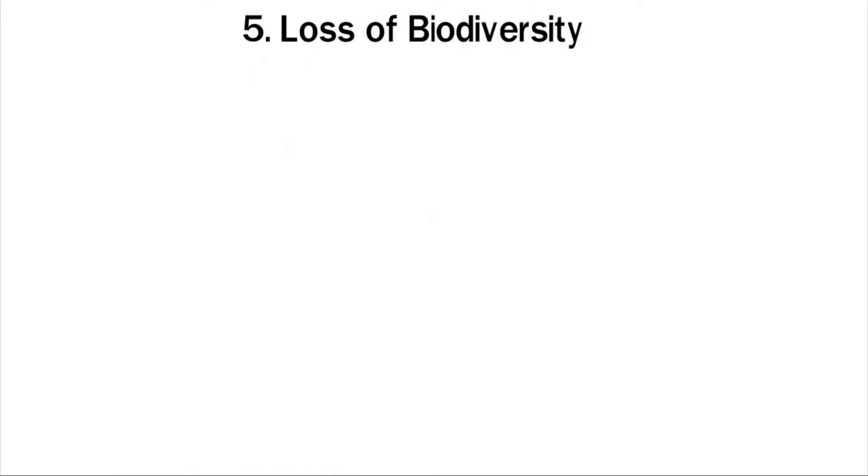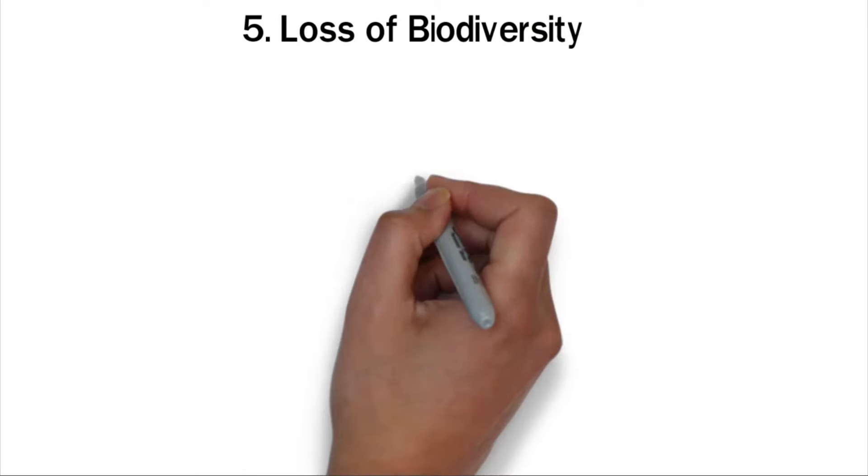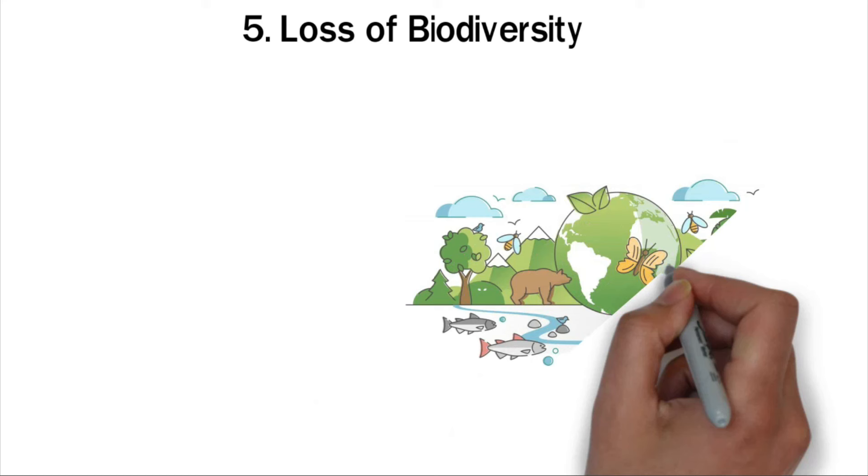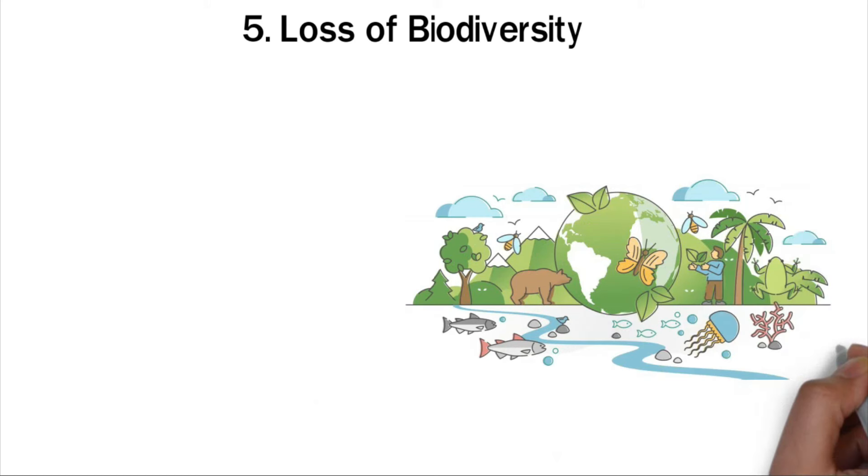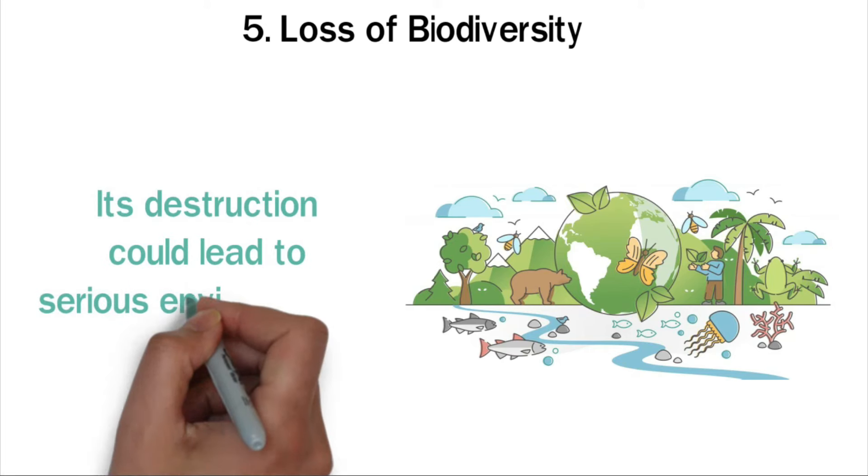Five: Loss of biodiversity. Rainforests provide shelter to different species of animals. Deforestation can lead to the loss of habitat and extinction of certain animals. The Amazon houses up to 10 percent of all animal species on earth. Its destruction could lead to serious environmental problems.